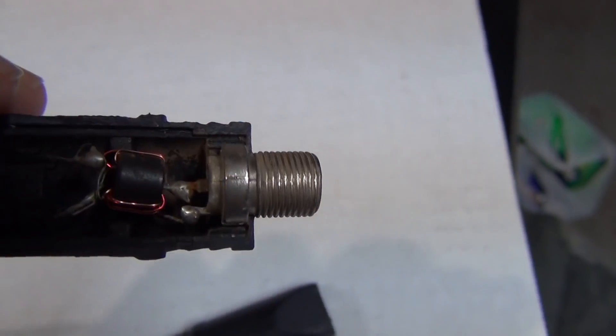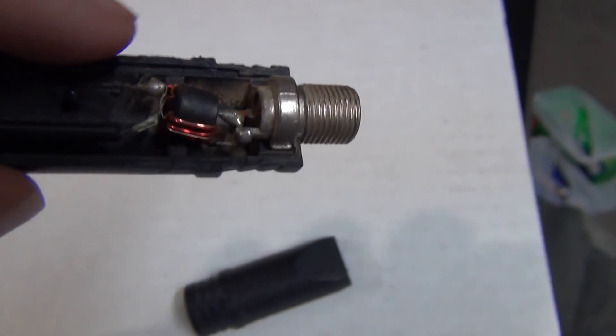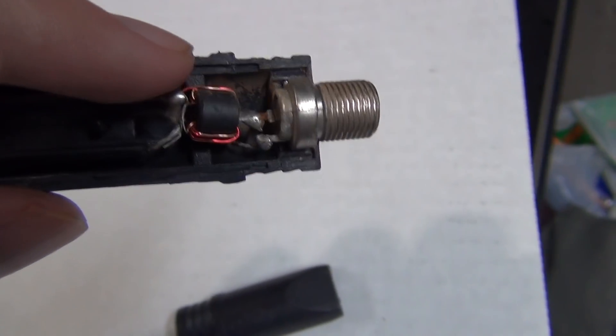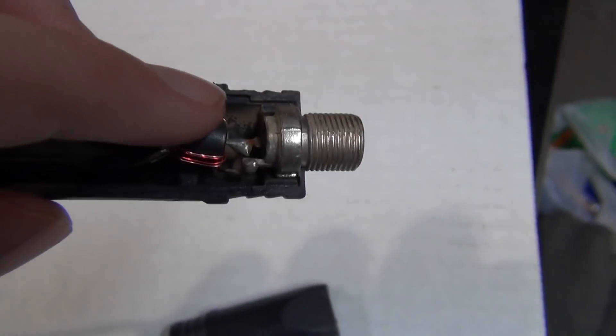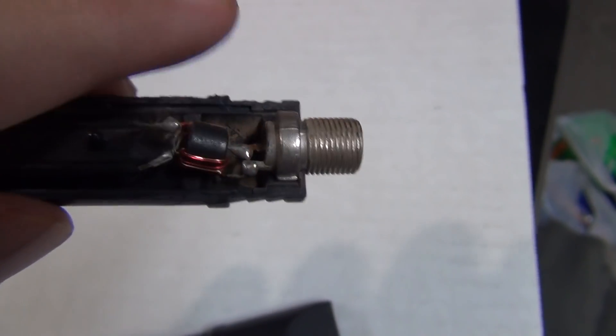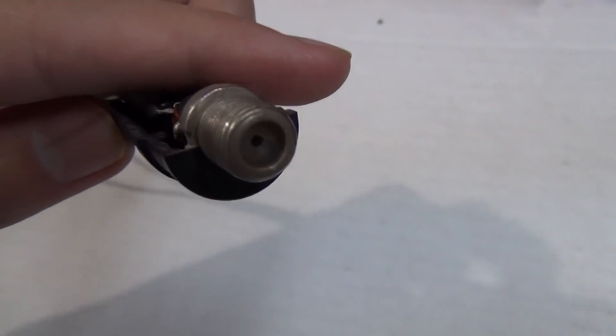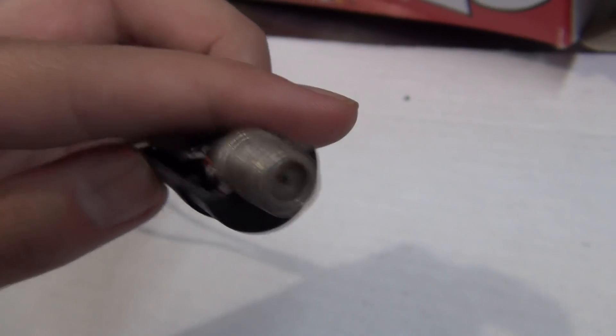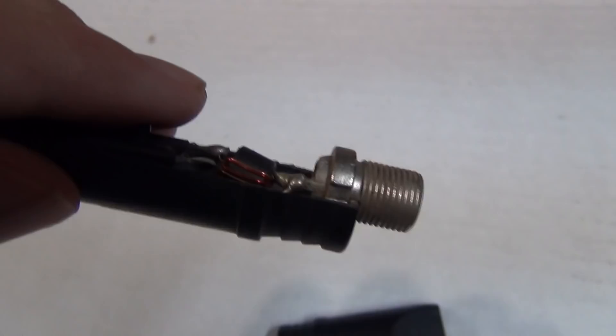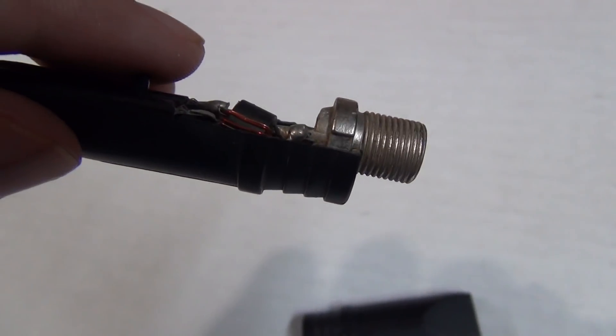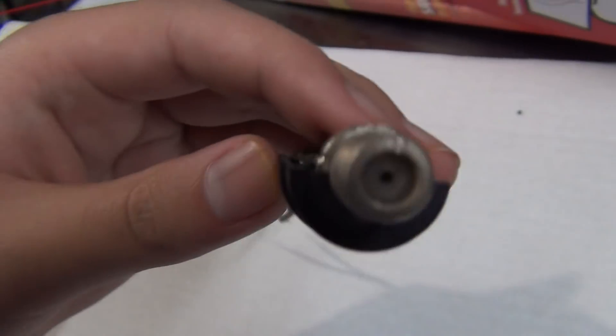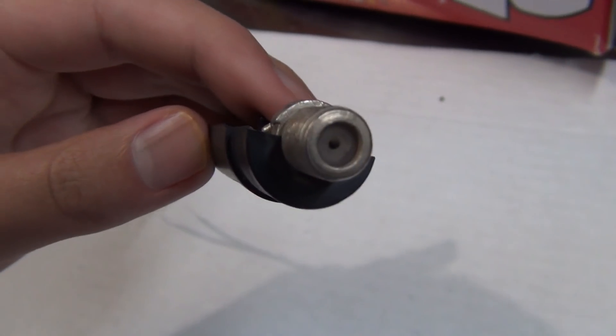And then you can see it gets soldered onto the coaxial cable. One of them is for the middle, which is, I'm not sure if it's negative or positive, but the middle part right there which is the pin, because that's a female connector. And then that outside part right there, that's the shield part of it, which is on the outside, you can't really see too well.